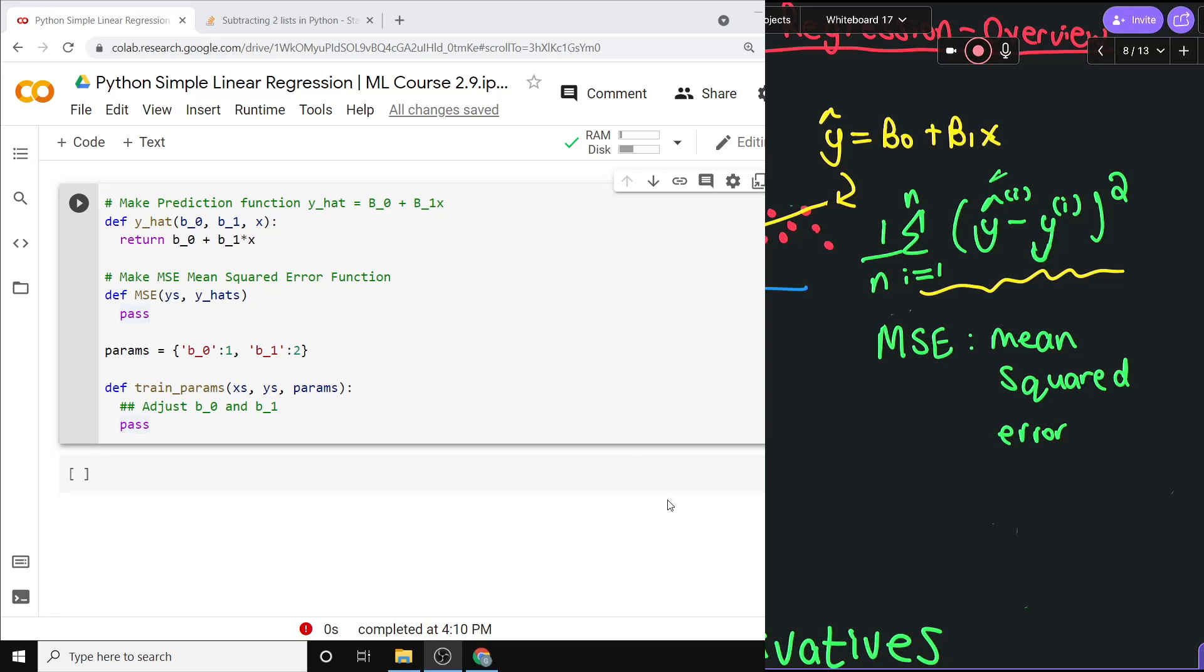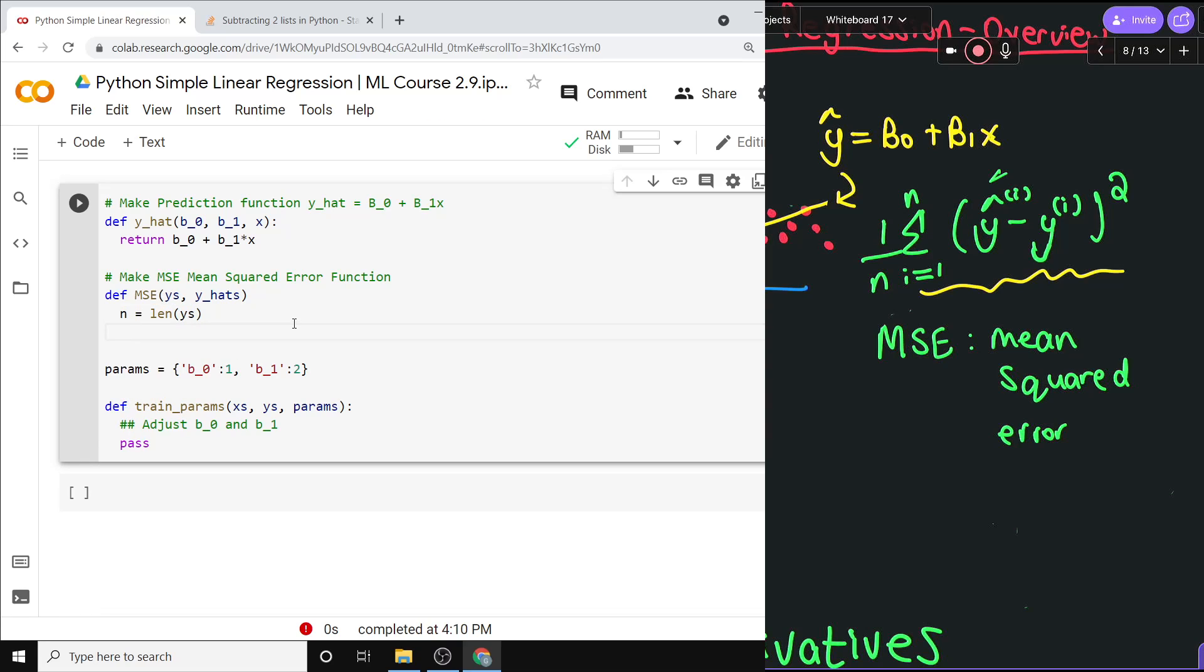There is a really nice way to write this using linear algebra, but we haven't seen this yet, so I'm going to do it in some kind of irritating code like this. So exactly what it is, well, n is equal to the length, which in Python we write as len, the len of either the y's or the y hats, they better be the same length. So that's n taken care of.